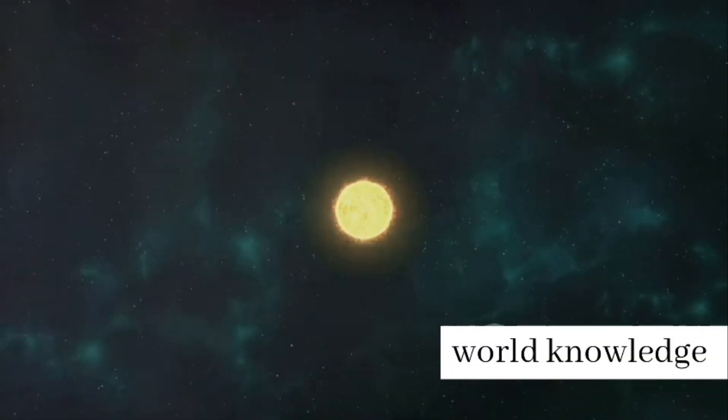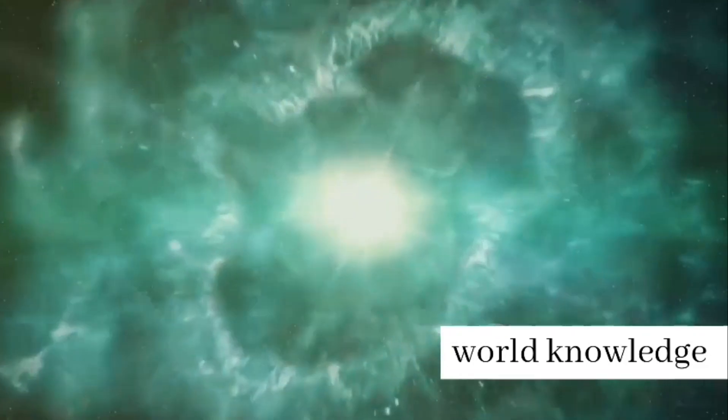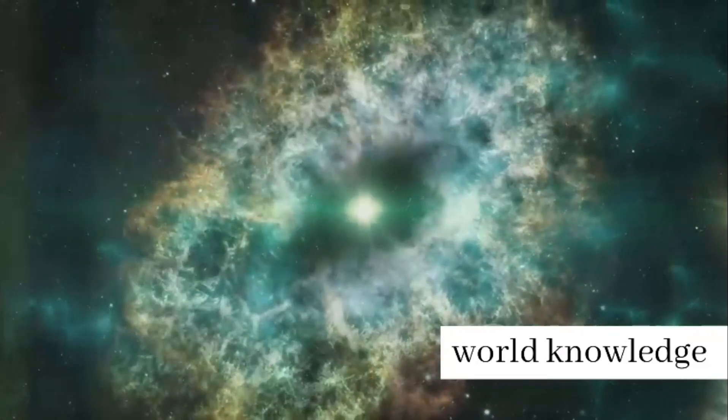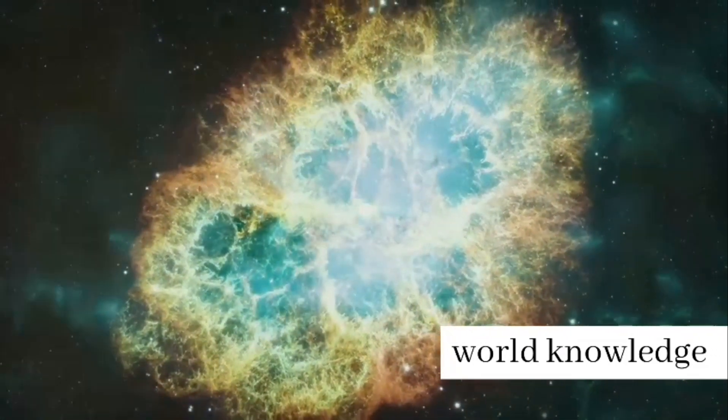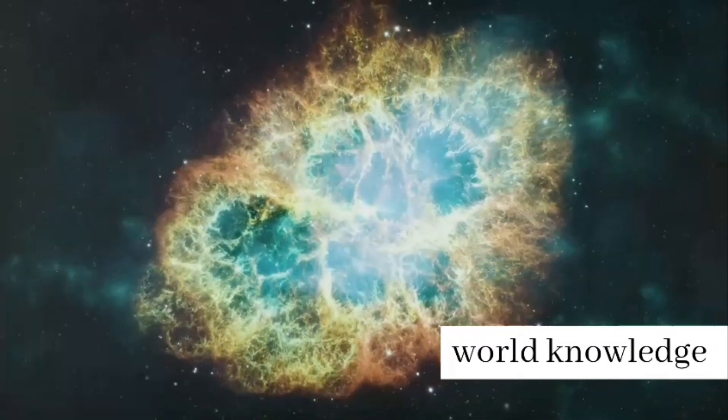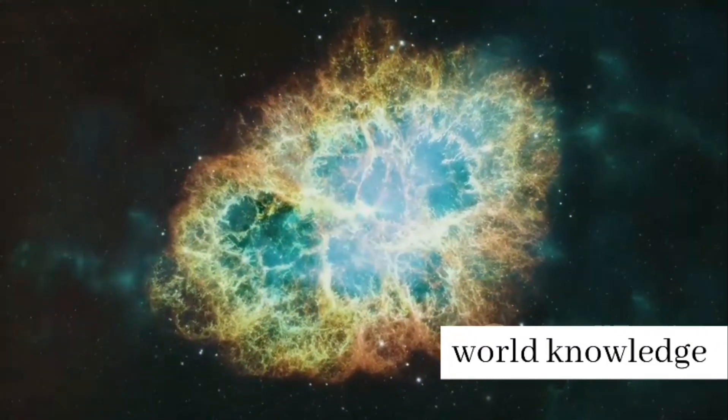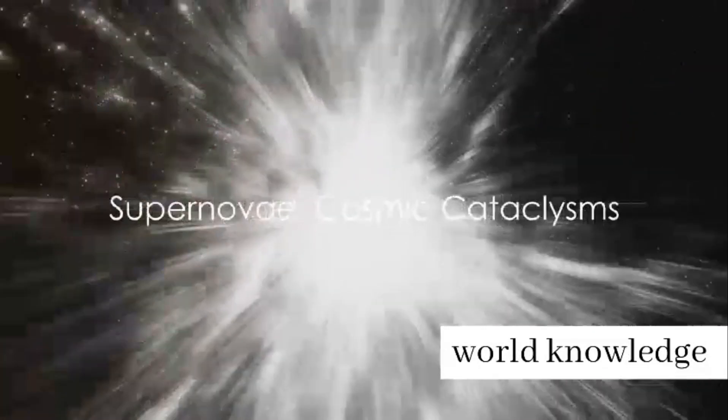Now, what happens when a supernova occurs near other celestial bodies? Well, the effects can be devastating. The shockwave from the explosion can obliterate any nearby planets, turning them into cosmic dust in the blink of an eye. The intense radiation can ionize gases millions of miles away, creating nebulae, vast glowing clouds of gas and dust.